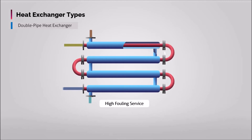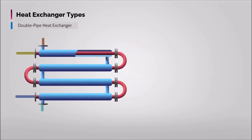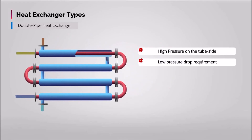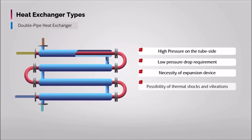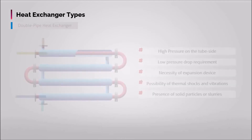Multi-tube exchangers are utilized when higher heat duties are required. A double pipe exchanger should be used when one or more of the following criteria apply: high pressure on the tube side, requirement of lower pressure drop on one side, necessity of an expansion device to improve the heat transfer coefficient, possibility of thermal shocks and flow-induced vibrations, or presence of solid particulates or slurries.